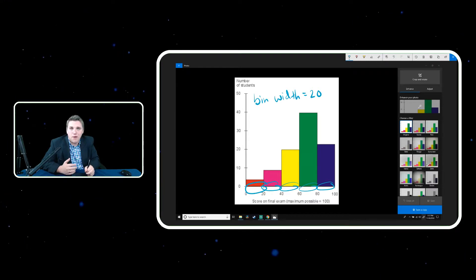Now, the height of the bars work a lot like bar graphs. The height of the bars represent how many observations were observed in between those two numbers, 40 and 60, or 60 and 80, or 80 and 100.